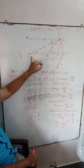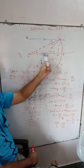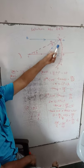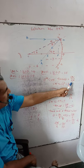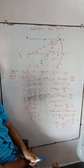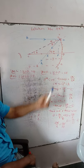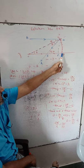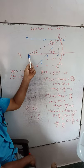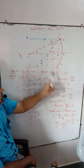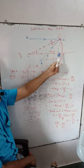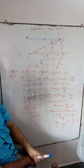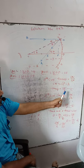Now consider the right-angle triangle CON. Applying the trigonometric function tan: tan theta equals opposite side ON divided by adjacent side CN. Therefore, tan theta equals ON divided by CN. Since the aperture of the spherical mirror is very small, the distance between N and P is negligibly small, so CN is approximately equal to CP. The distance between the center of curvature and the pole is the radius of curvature R, so CN equals CP equals R. Substituting: tan theta equals ON divided by R. This is equation number 1.